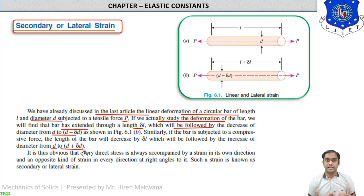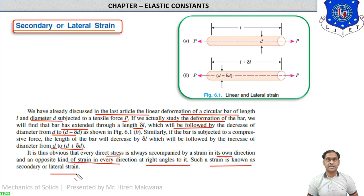Every direct strain is always accompanied by a strain in its own direction and an opposite kind of strain in the direction at right angles to it — such a strain is known as secondary or lateral strain. So lateral strain equals delta-d by d (change in diameter upon original diameter), while linear strain equals delta-l by l (change in length upon original length).